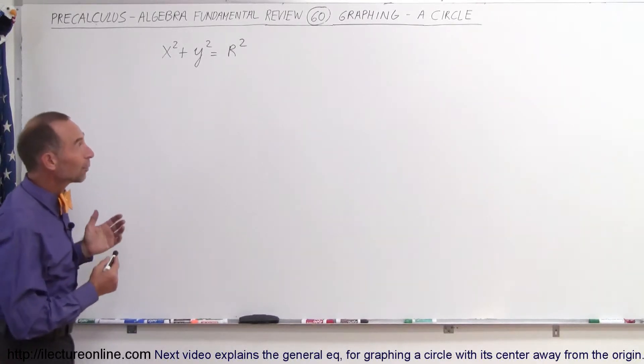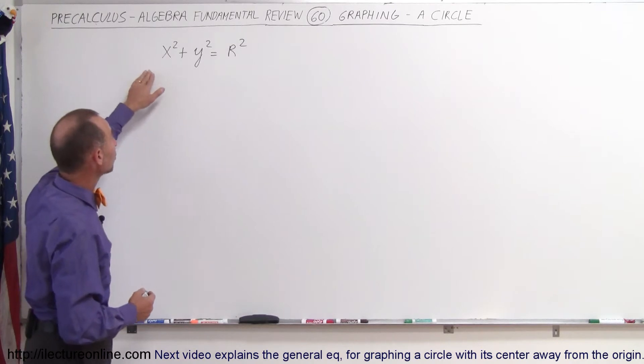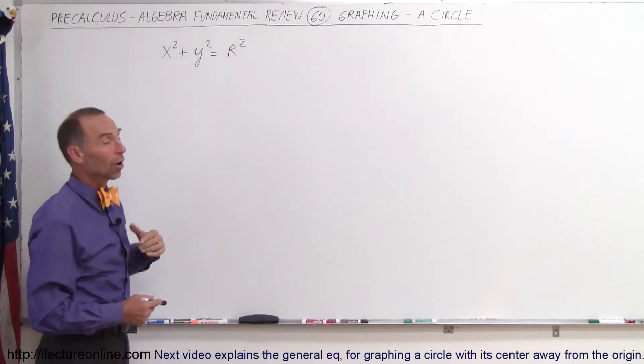Welcome to ElectronLine, and here we're going to learn how to graph a circle. A circle's general equation is x squared plus y squared equals r squared.